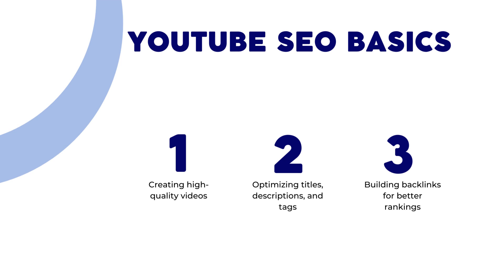SEO for YouTube is a complex and ever-evolving field, and there are many different strategies you can use to improve your rankings and get more views. By focusing on creating high-quality videos, building backlinks to your content, and optimizing your titles, descriptions, and tags, you can increase your visibility and attract more viewers to your channel.